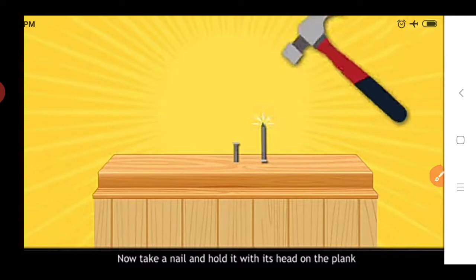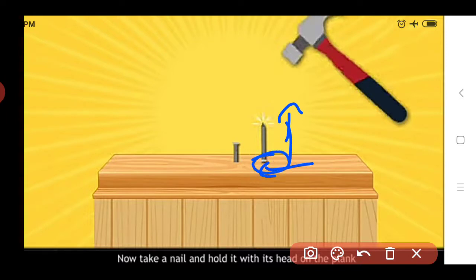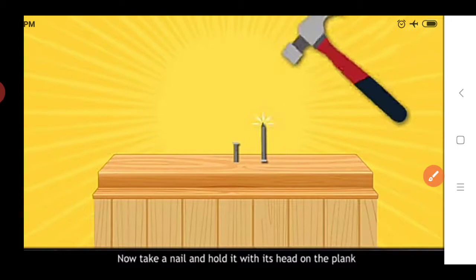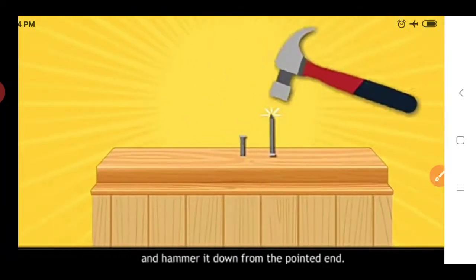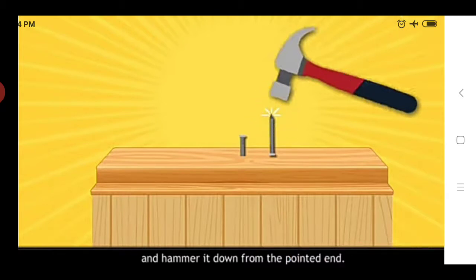In the next step, take a nail and hold it with the head on the plank - meaning keep the nail in the reverse direction, with the head on the plank surface and the pointed end facing upward. After that, you hammer it down from the pointed end - applying force using the hammer on that pointed end. What happens when we do this activity - hammering the pointed end on the plank?